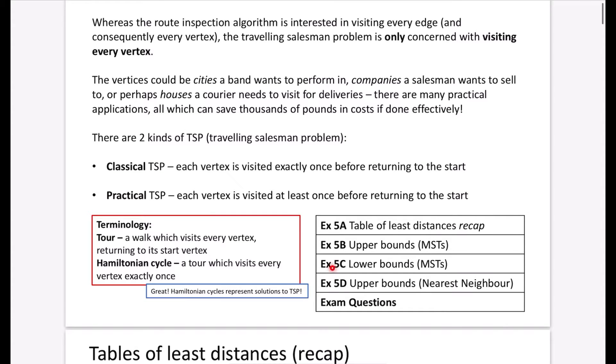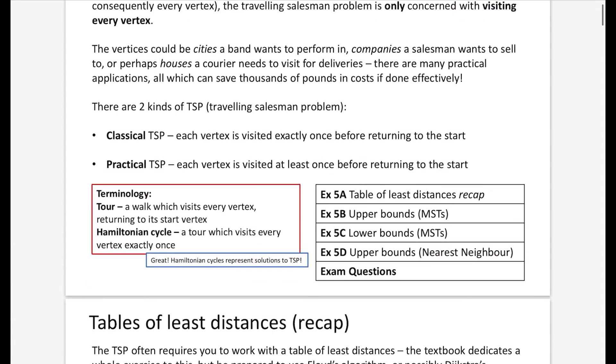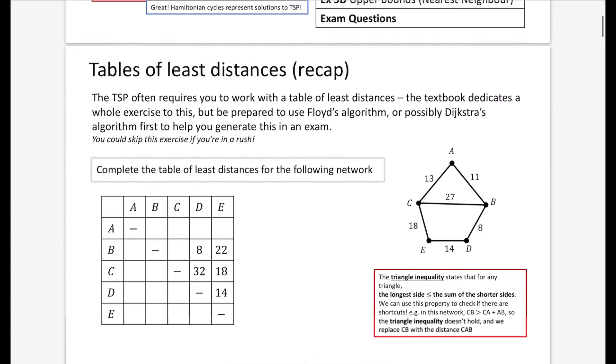So we've got these four different exercises. The first one is just a recap. We really don't need to do much on this at all. And then we're going to talk about using minimum spanning trees for upper and lower bounds. And we're going to be talking about finding an upper bound using the nearest neighbor algorithm, which I would say is probably the easiest algorithm in all of D1.